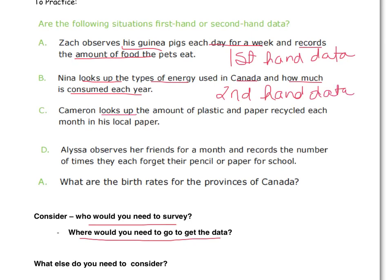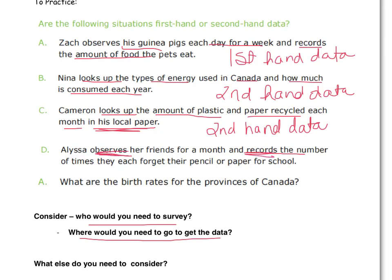Cameron looks up the amount of plastic and paper recycled each month in his local newspaper. He's looking at another source — he's not collecting, measuring, or experimenting himself. So that would be second-hand data. Alyssa observes her friends for a month and records the number of times they forget their pencil or paper. She's doing the observing, the recording, and taking down the information — she's conducting that experiment. That would make it first-hand data.